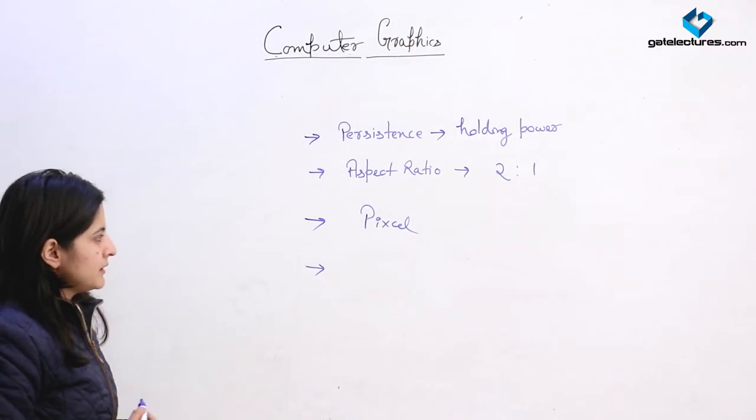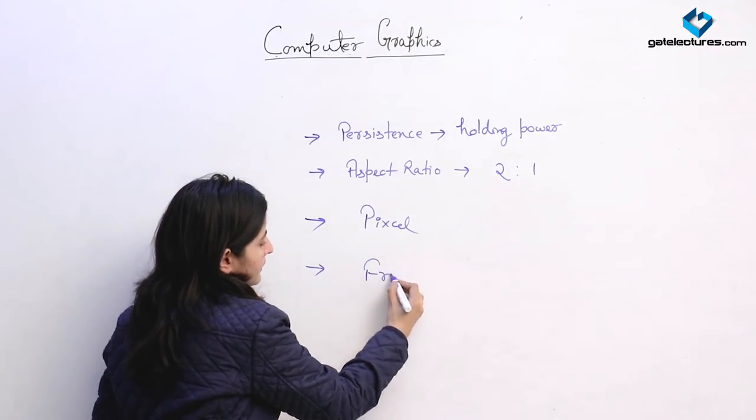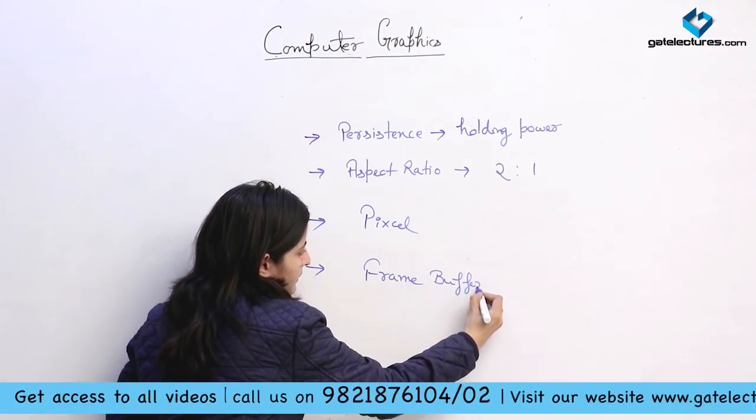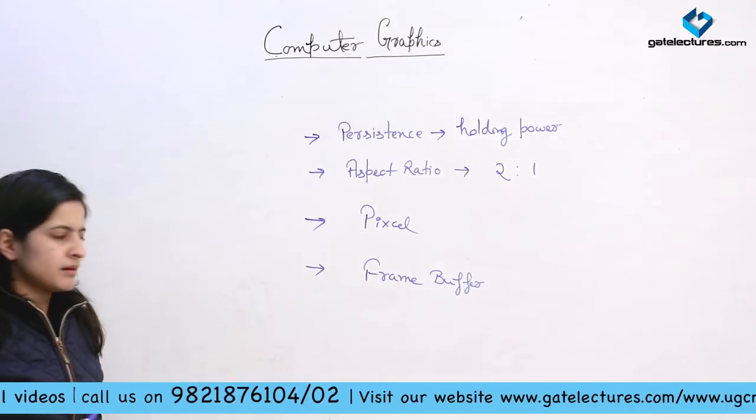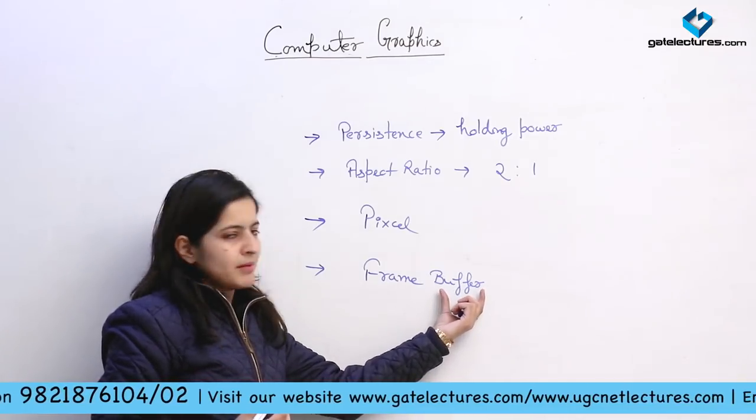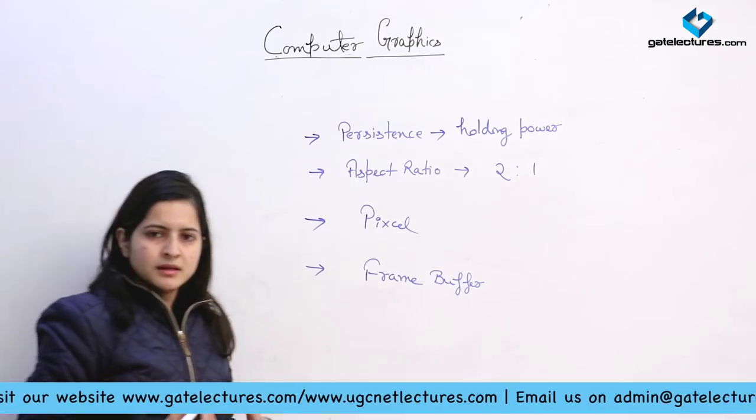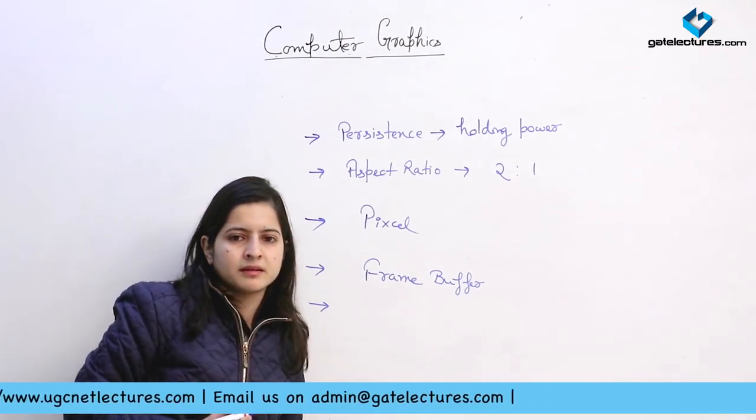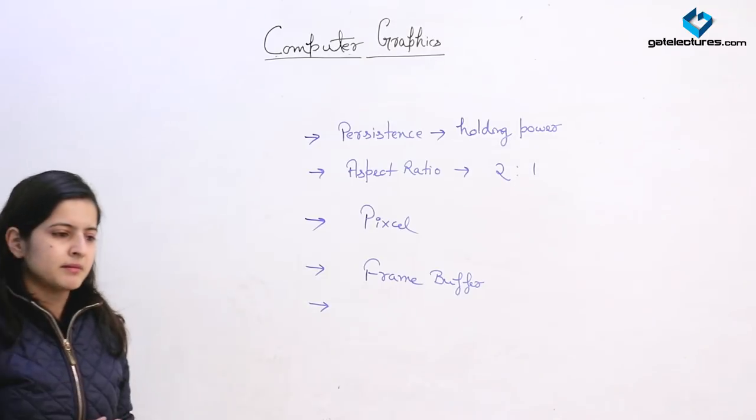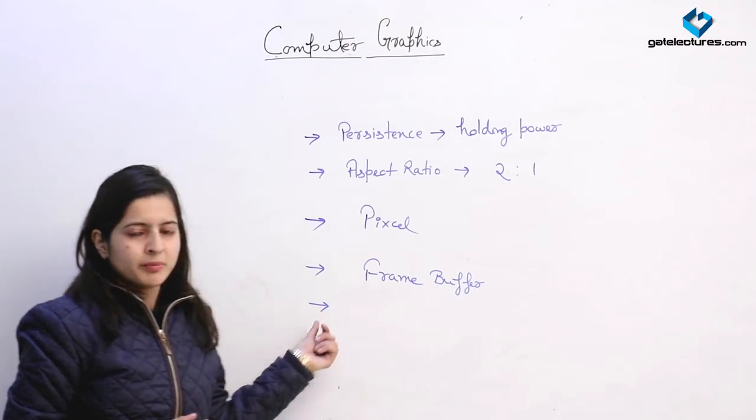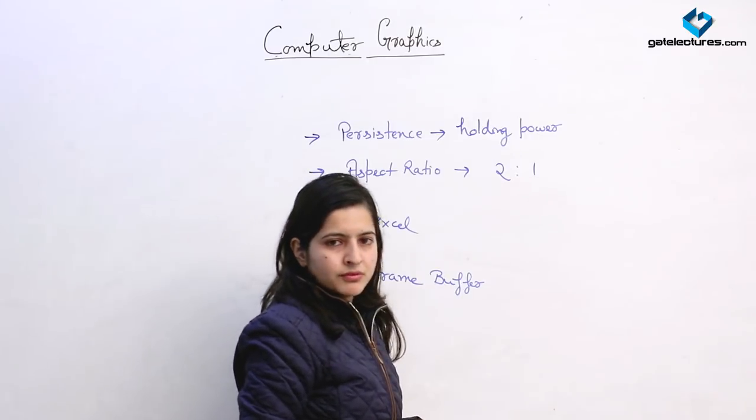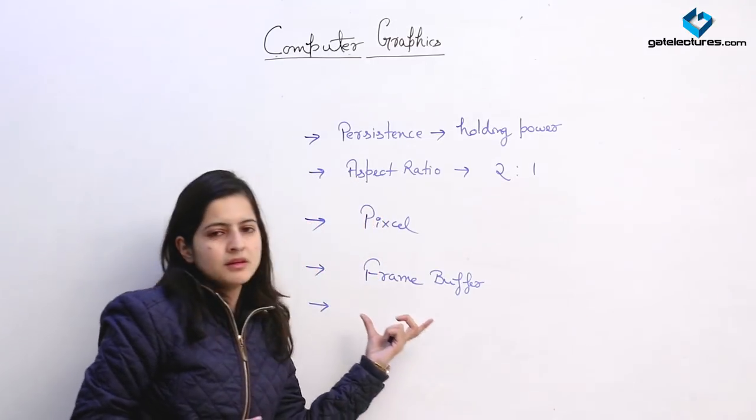Next term is frame buffer. A frame buffer is memory for holding the image. Whenever we are creating images and applying motions or other operations on them, the intermediate parts which we are changing are stored in the frame buffers.